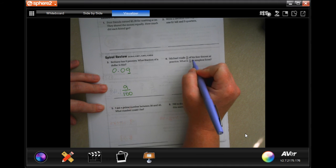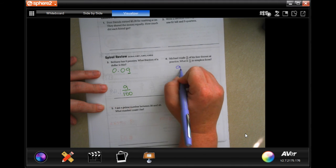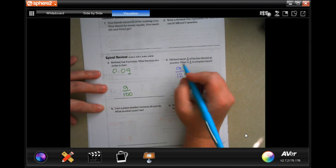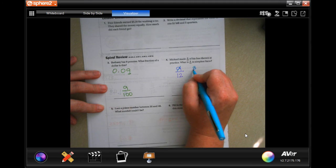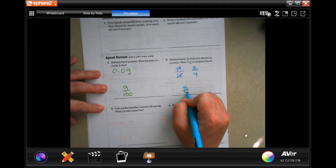Michael made nine twelfths of his free throws at practice. What is nine twelfths in its simplest form? Well, nine over twelve, three goes into both of those. So three goes into nine three times and three goes into twelve four times. Done.